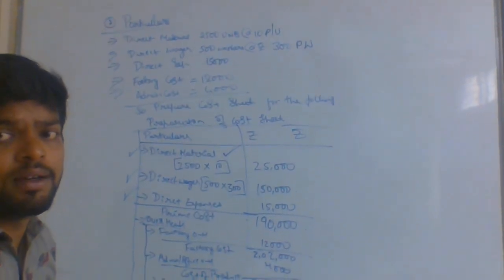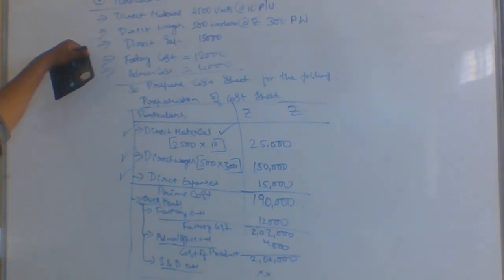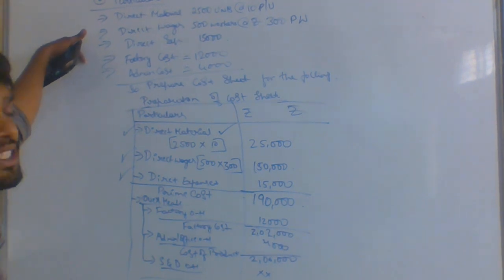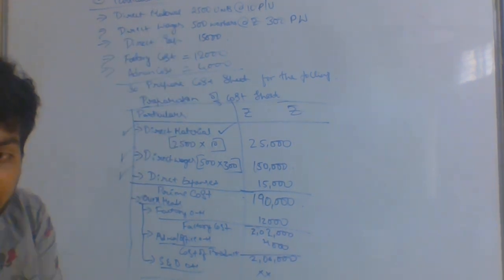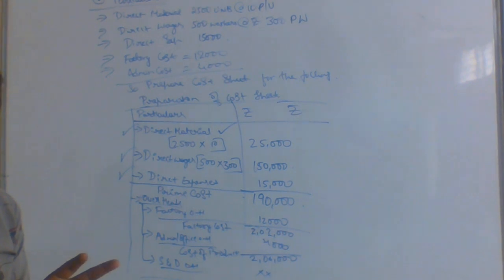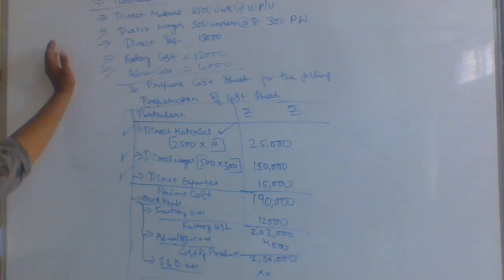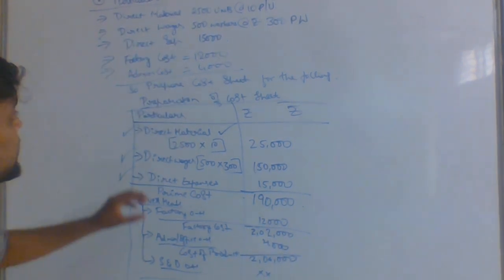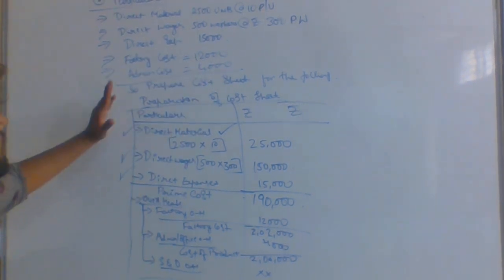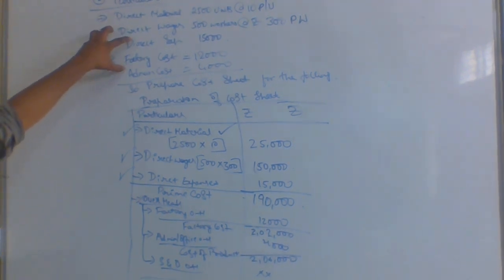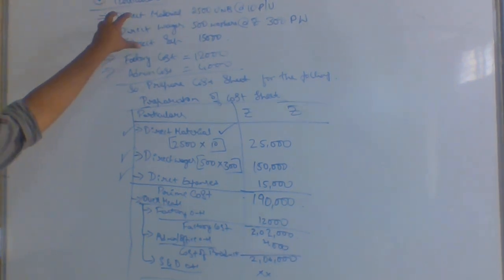Let us once again explain. They are given the question as: direct material — 2,500 units at rupees 10 per unit. And direct wages as 500 workers at rupees 300 per worker, which means 500 workers are working in the company and each worker is given 300 rupees. Direct expenses are mentioned clearly as 15,000. Factory expenses incurred is 12,000 and administration or office expenses incurred is 4,000. Now we want to prepare the cost sheet with the help of this problem.